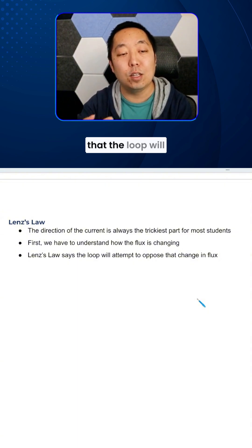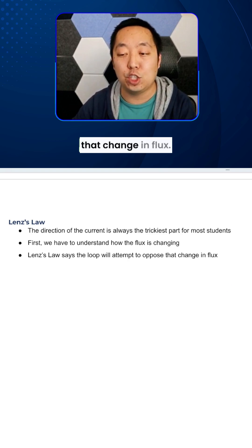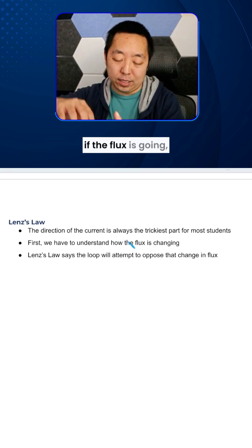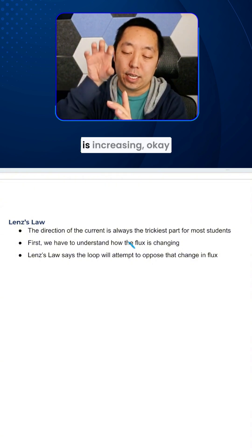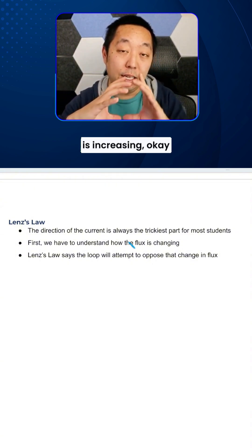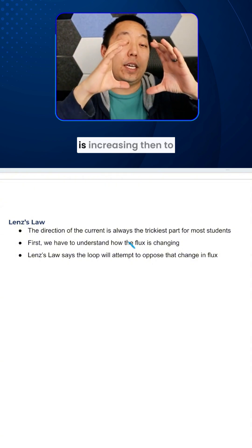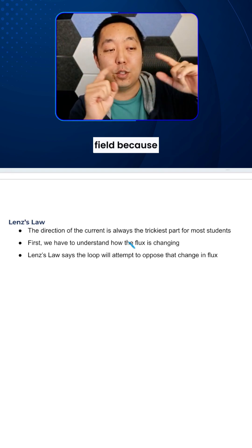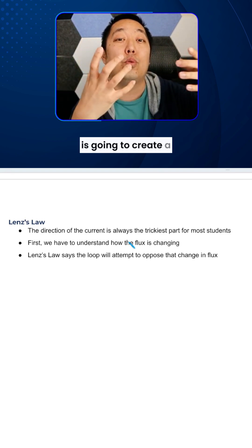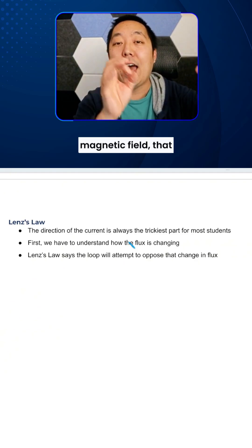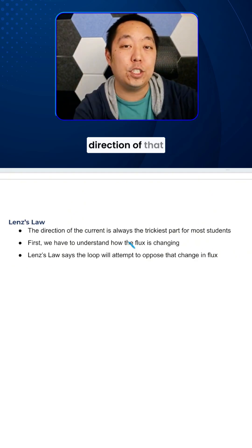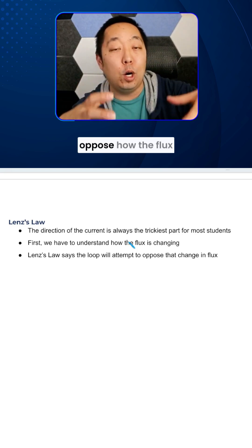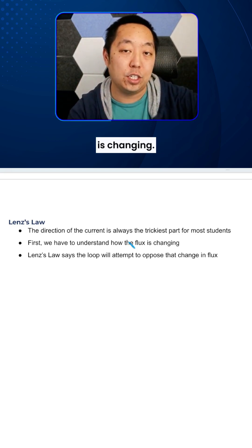Lenz's Law says that the loop will attempt to oppose that change in flux. So what that means is if the flux going into the loop is increasing, then to oppose it, it's going to induce a magnetic field. Because remember, this current is going to create a magnetic field, and the direction of that magnetic field is based on a way to oppose how the flux is changing.